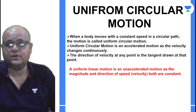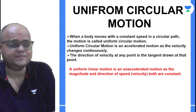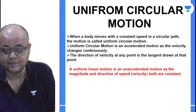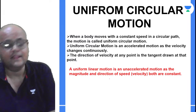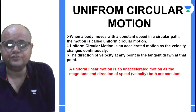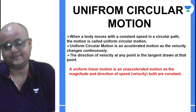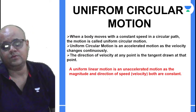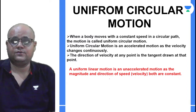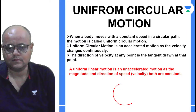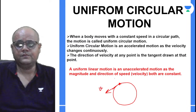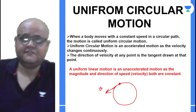Now let's move to uniform circular motion. First, don't get confused between circular and rotational motion — both are different. When a body moves about a point, I call it circular motion. When a body moves about an axis, I call it rotational motion.